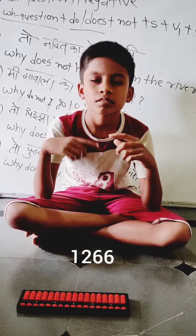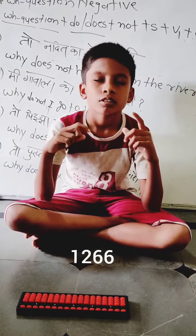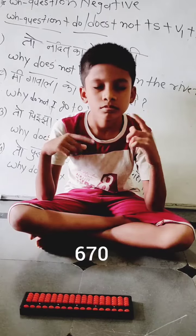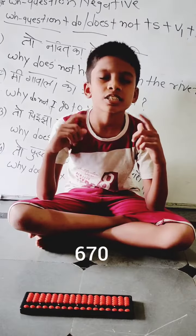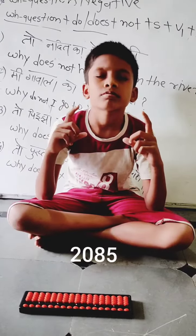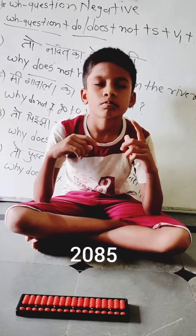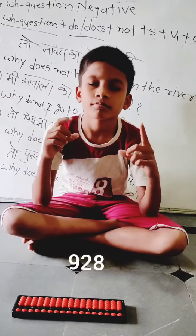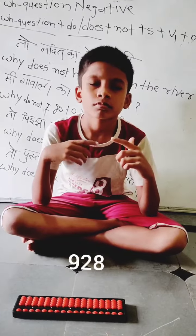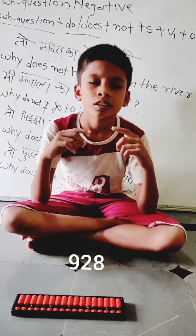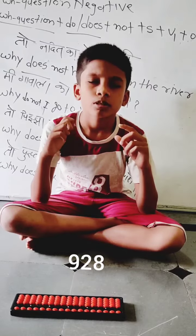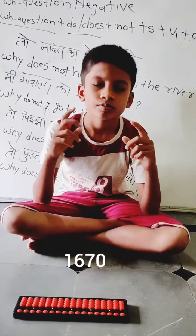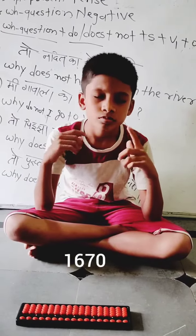422 x 3 = 1266. Correct. 335 x 2 = 670. Correct. 417 x 5 = 2085. Correct. 232 x 4 = 928. Correct. 334 x 5 = 1670. Correct.